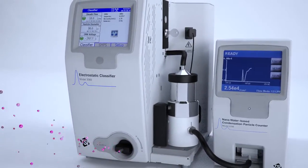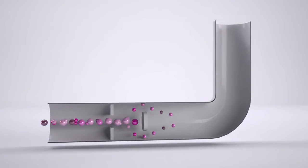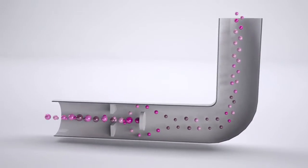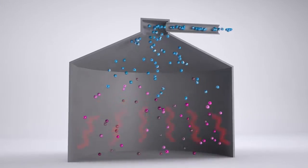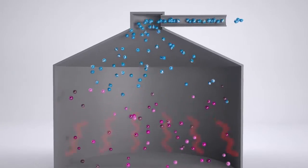The classifier draws in aerosol samples through an impactor that measures the flow and removes the largest particles which could clog the instrument or distort the results. The remaining sample passes through a bipolar neutralizer which uses ions to produce a known steady-state distribution of electrical charge on the particles.